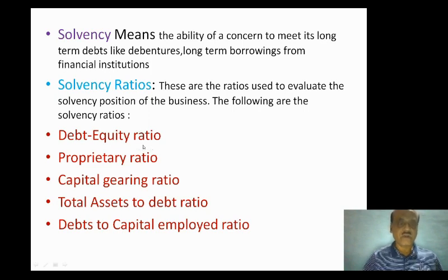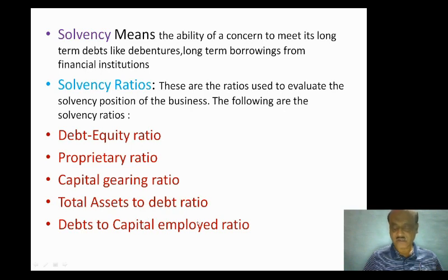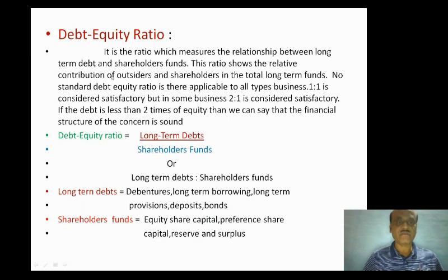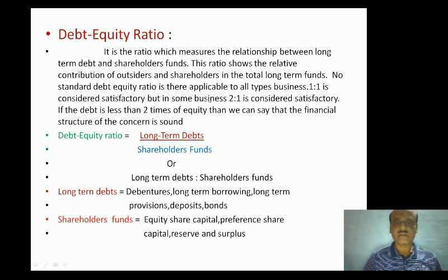The debt equity ratio is the ratio which measures the relationship between long-term debt and shareholders fund. This ratio shows the relative contribution of outsiders and shareholders in the total long-term funds. No standard debt equity ratio is applicable to all types of businesses. 1 is to 1 is considered satisfactory, but in some businesses 2 is to 1 is considered satisfactory. If the debt is less than 2 times the equity, then the financial structure of the concern is sound.